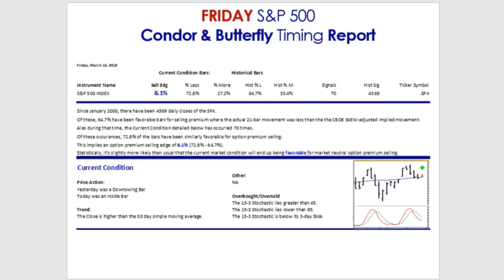That's about 8.1% more than the baseline history going back to January 2000 — a premium selling edge we calculate. So statistically, it's more likely than usual that our current market condition will end up being favorable for market-neutral option premium selling. That's it for the Condor Butterfly Timing Report — looking pretty good.